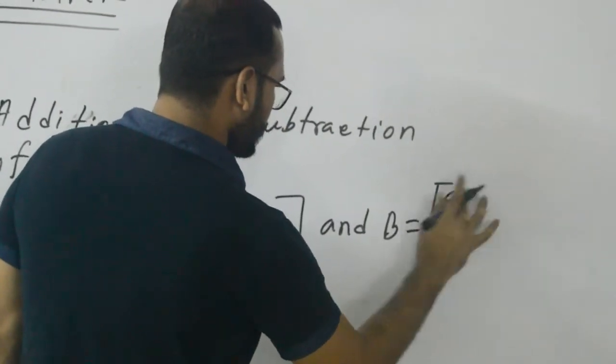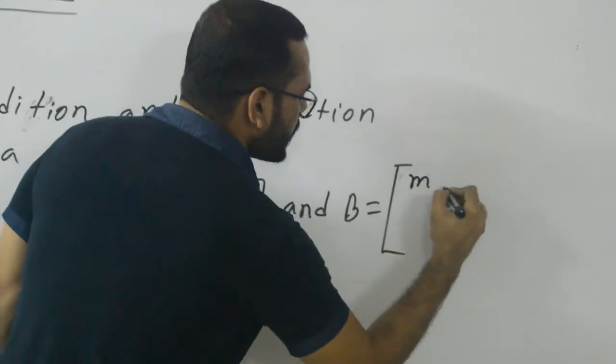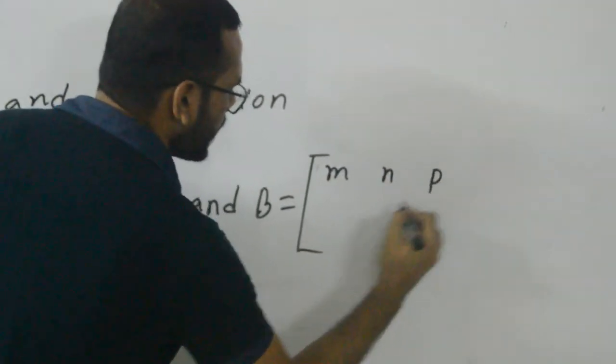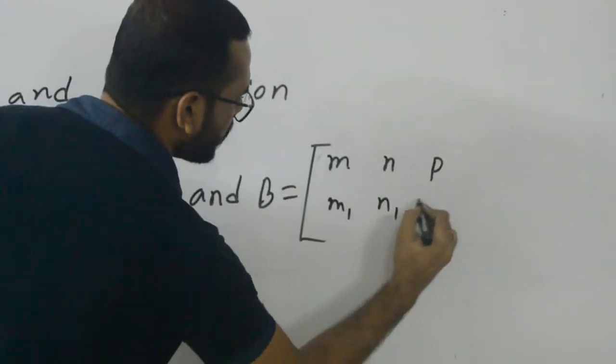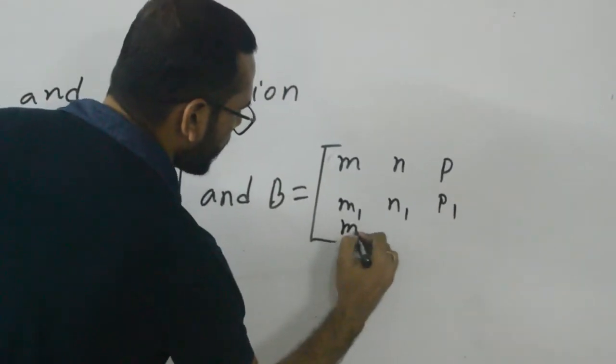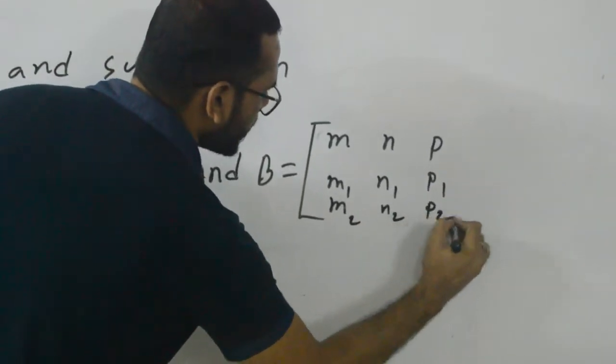And another matrix B contains entries: m, n, p in the first row; m1, n1, p1 in the second row; and m2, n2, p2 in the third row.